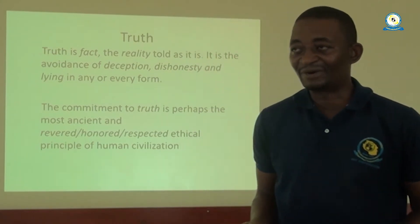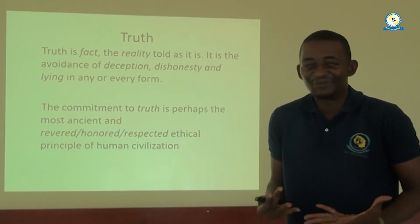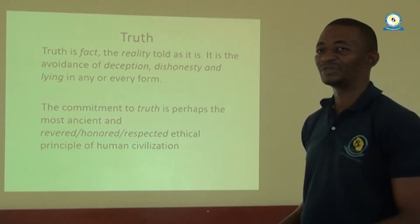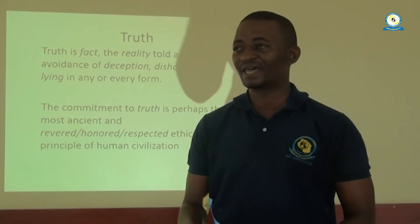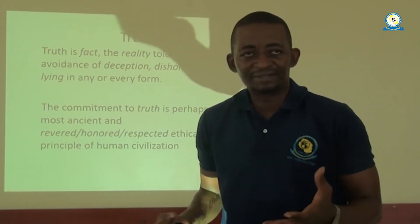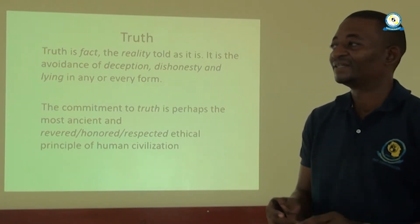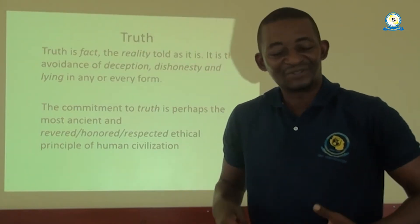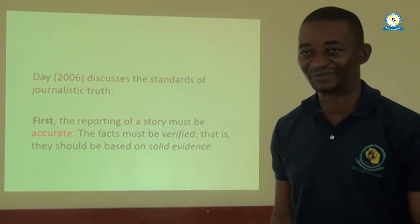If you refer to the absolutes by Immanuel Kant or ontology, we must abide by these principles which are universally acknowledged. All journalists must abide by telling the truth always. The commitment to truth is perhaps the most ancient and respected ethical principle in any human civilization. Sometimes we are tempted to lie or forced to use deception to get information, but the bottom line remains that truth should prevail always, and truth is well entrenched in moral and legal philosophy.